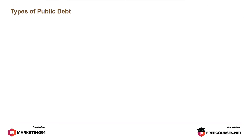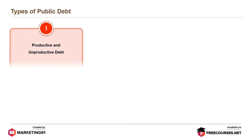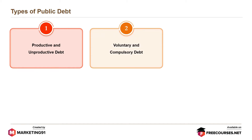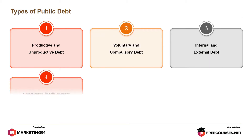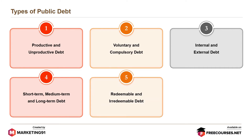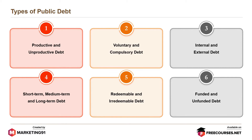The types of public debt are: productive and unproductive debt; voluntary and compulsory debt; internal and external debt; short-term, medium-term, and long-term debt; redeemable and irredeemable debt; and funded and unfunded debt.